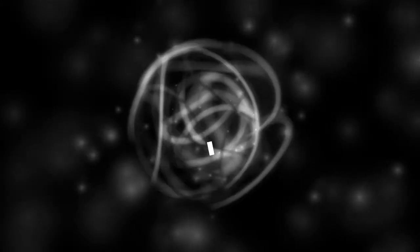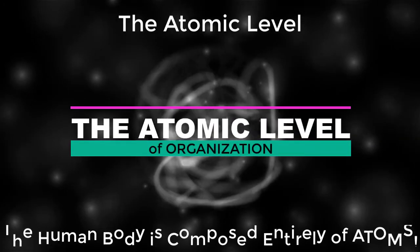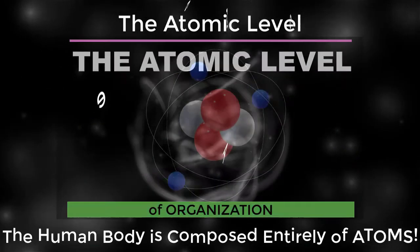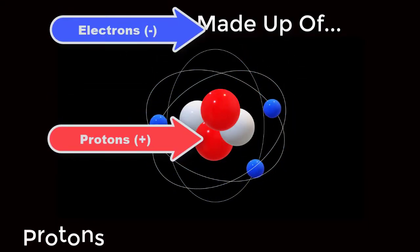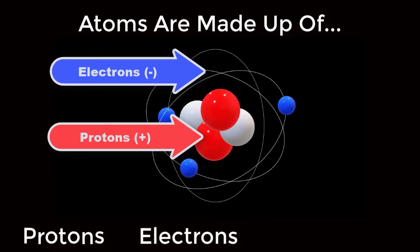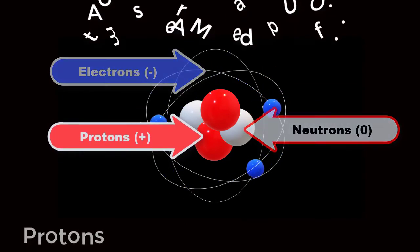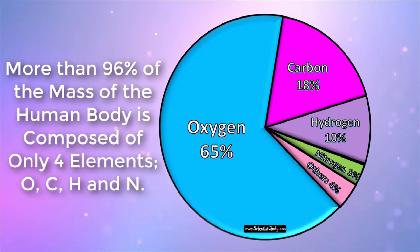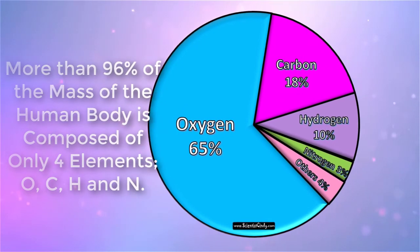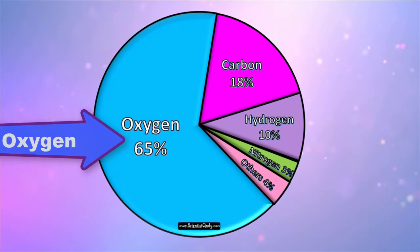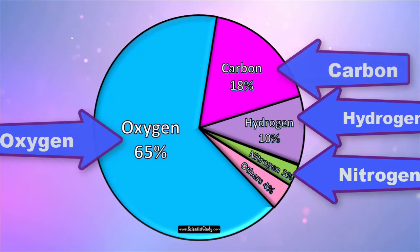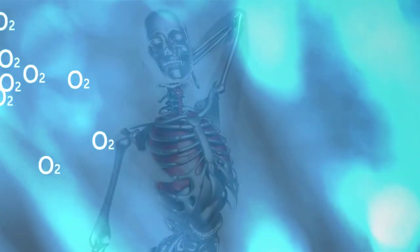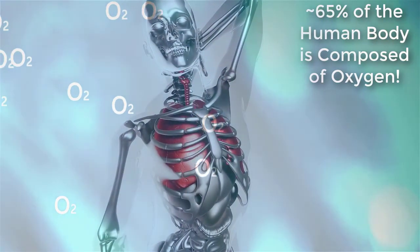We begin at the atomic level of organization. At this level the human body is composed of atoms. Atoms are made up of three subatomic particles: positively charged protons, negatively charged electrons, and neutrons which have no charge. More than 96 percent of the mass of the human body is made up of only four elements.